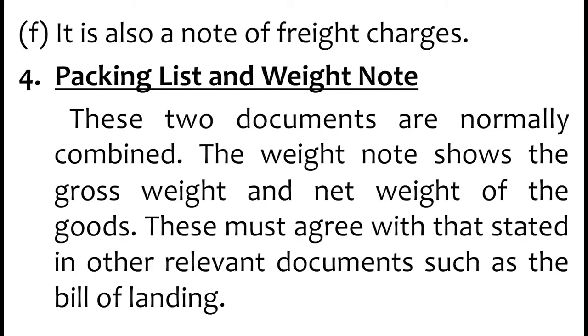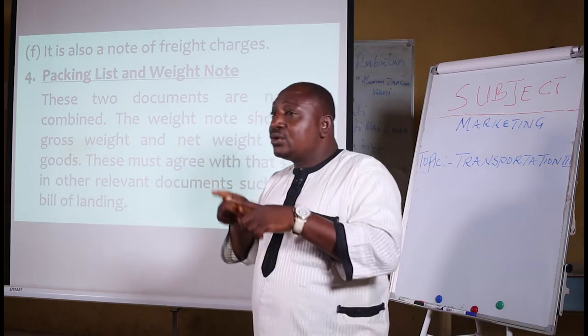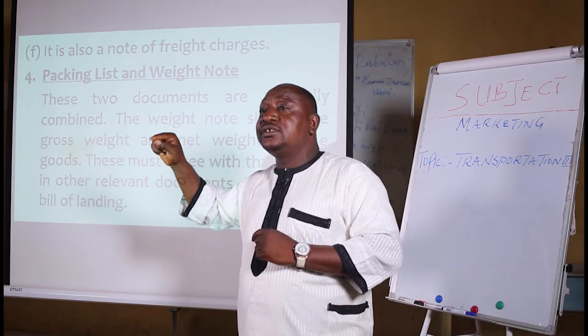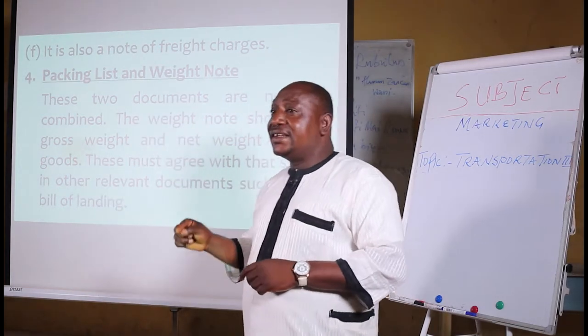Now let's look at the last one — that is the packing list and weight note. The packing list and weight note: these two documents are normally combined. The weight note shows the gross weight and net weight of the goods. This must agree with that stated in other relevant documents, such as the bill of lading. The packing list and the weight notes must agree with the bill of lading before these goods are being cleared. If they don't agree, then the goods are not eligible to be transported to their final destination.